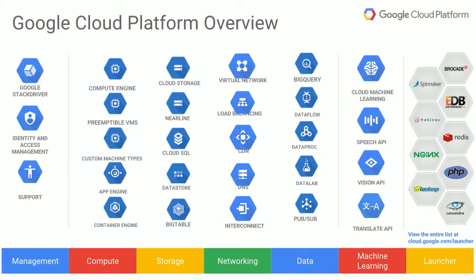In addition to the data analytics services, we recently added machine learning as a new product family. Using the Google machine learning APIs, you can get predictive results in speech, vision, or translation. If you still want to use your own data to build machine learning models, we can help you with that as well.